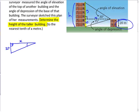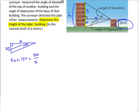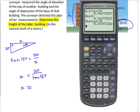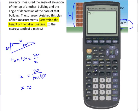Set up a trig equation using 15 degrees to find x. You're using tangent — tangent of 15 equals x over 20, since x is opposite and 20 is adjacent. Rearranging, x = 20 divided by tangent of 15. You can work out that horizontal distance: 20 divided by tan 15 gives approximately 74.641.